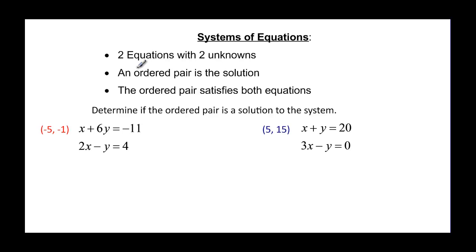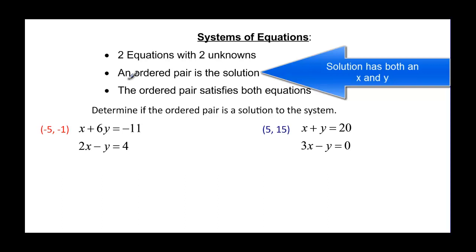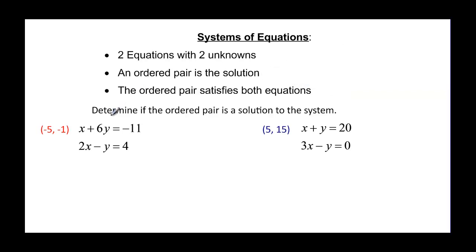We've done one unknown before in equations, but we've never done two unknowns with two equations. And when we do those, we will have an ordered pair as a solution, so we need both an x and a y. And that ordered pair that we find has to satisfy both equations. So that's what we want to do in these two problems. It says determine if the ordered pair is a solution to the system.